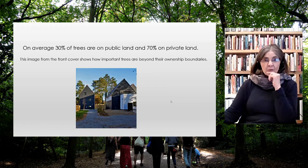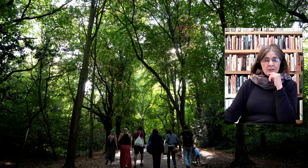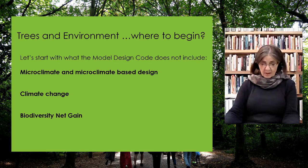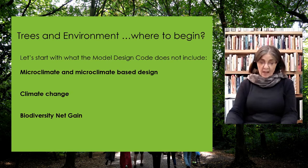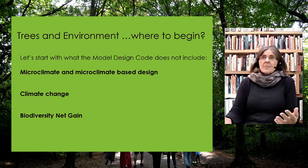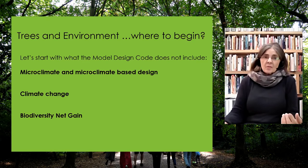We need to think how to look after those trees and help retain them. Looking at the model design code, I was really concerned that I didn't see words like 'microclimate' and 'microclimate-based design'. How can the same sort of house be facing north, south, east or west? Is somebody claiming they want a north-facing living room, or is it an unconsidered approach to masterplanning?